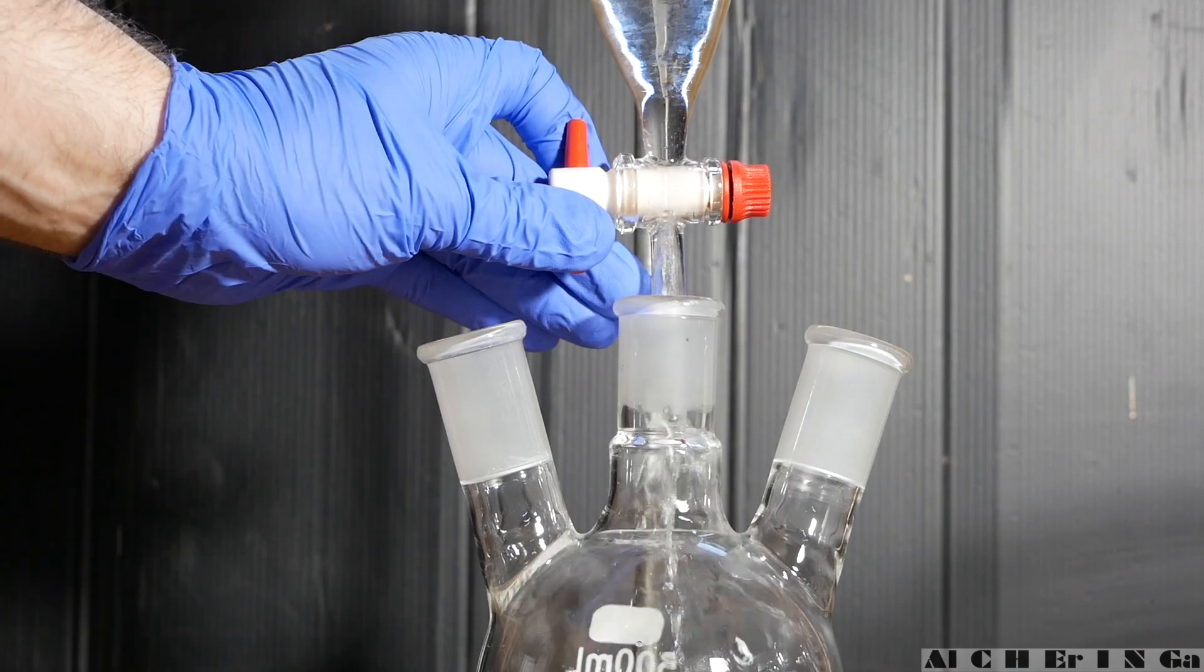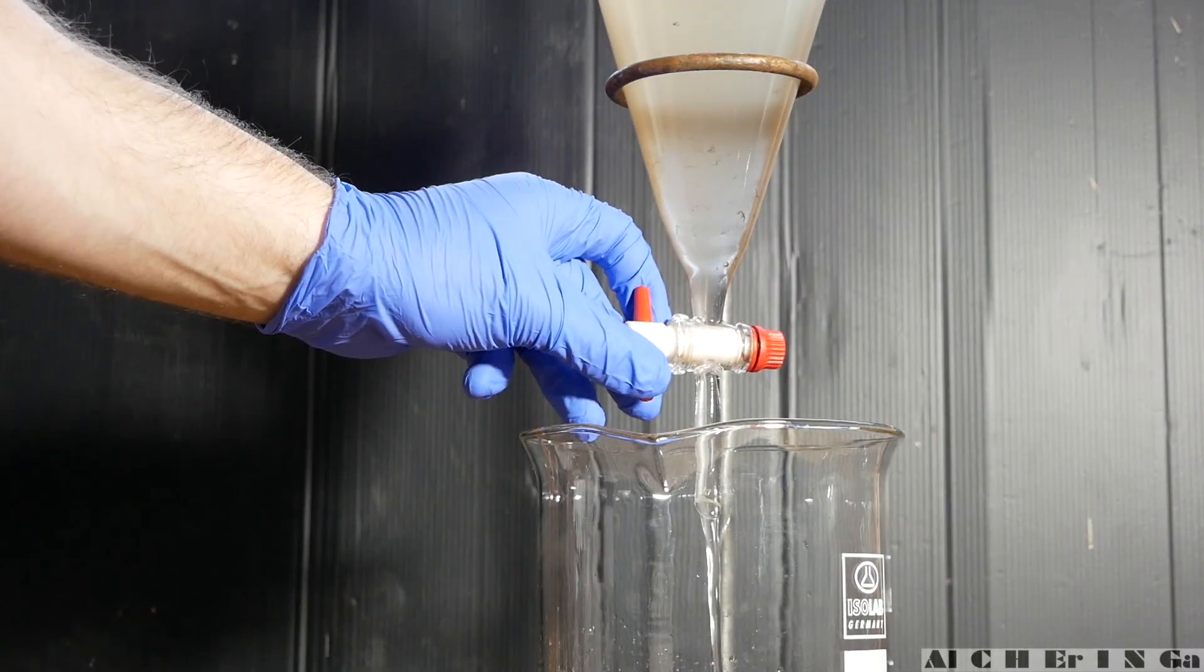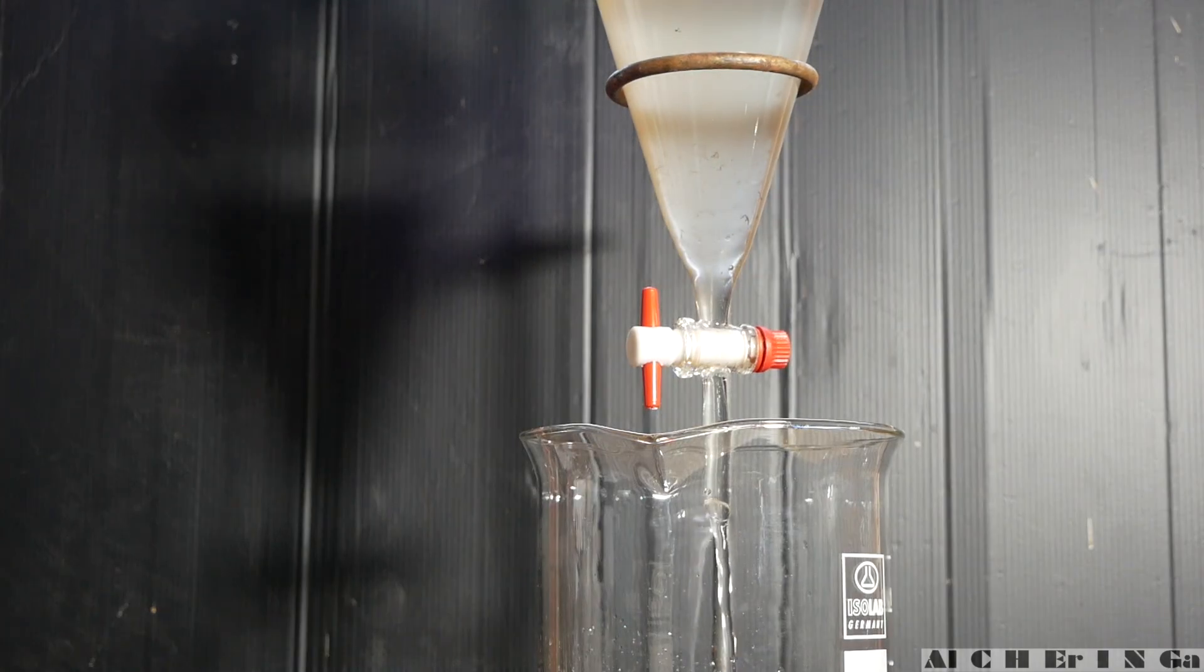Swirl the separatory funnel, vent and drain the bottom layer into a suitable flask. Drain the upper aqueous layer into a beaker. The first washing with dichloromethane is now complete.